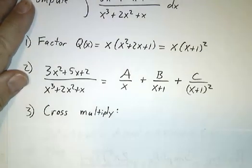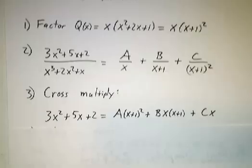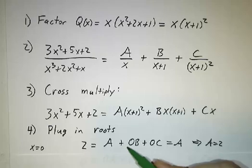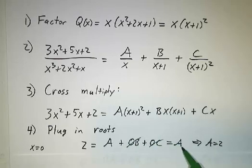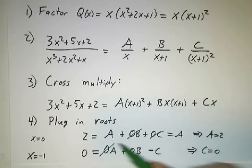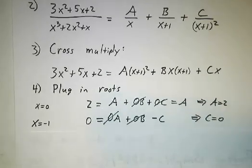And then we do the same thing we did before. We cross multiply, and we start plugging in numbers. You plug in 0, and the B and the C terms disappear, and you get A. You plug in negative 1, and the A and the B terms disappear, and you get C.